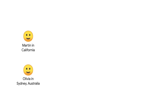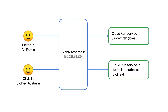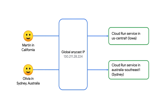You don't have to. The Google Cloud HTTPS Load Balancer lets you use global anycast IPs, meaning wherever the user connects from, they're routed to the nearest Google Data Center. And then the Cloud Load Balancer will route the request to the nearest Cloud Run service that you have deployed.